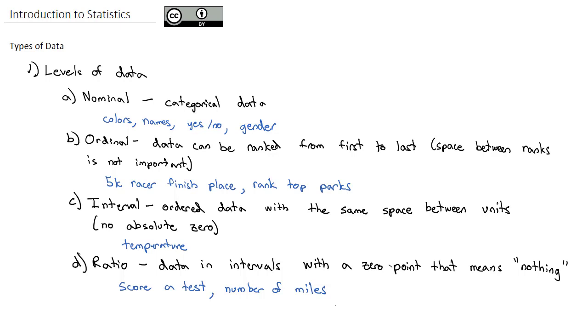Those are different levels of data. As we have more complex data, it becomes a higher level of data. One way we can classify data is by these different levels of data. Another way we can classify data though is by looking at the different types of data.